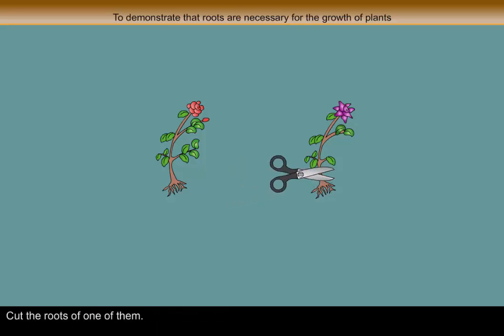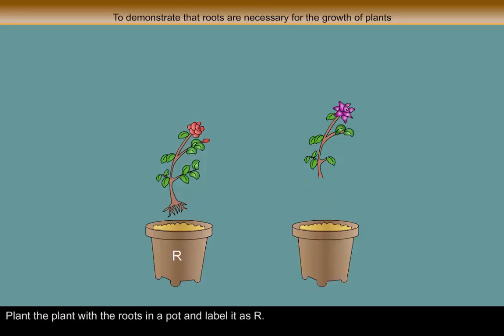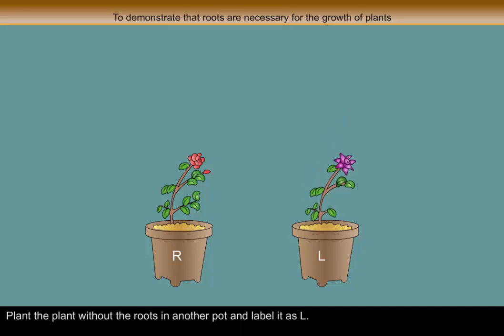Cut the roots of one of them. Plant the plant with the roots in a pot and label it as R. Plant the plant without the roots in another pot and label it as L.